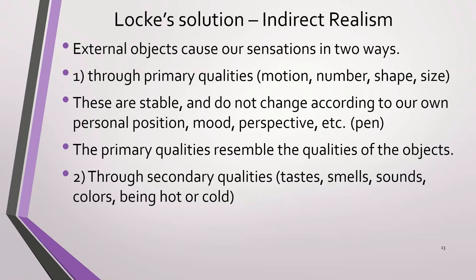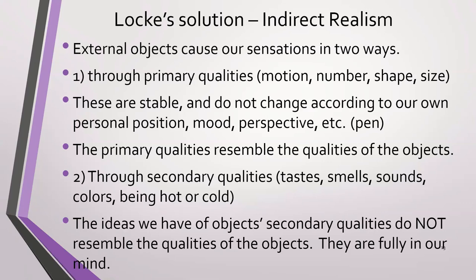But external objects cause sensations in another way, through secondary qualities. And here's where I mistakenly mentioned color as a primary quality. It's a secondary quality. Tastes, smells, sounds, especially the pitch of sounds, colors, being hot or cold. These qualities are experienced within our mind, but do not exist out there in the external world. They're caused by effluvium or various shapes of things and the motion of things. They're caused by the primary qualities of the things in the external world.